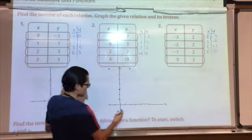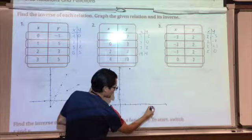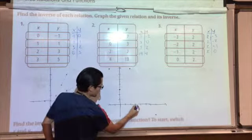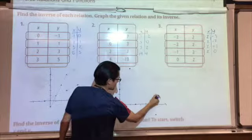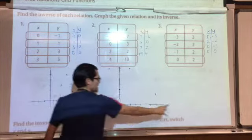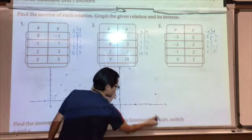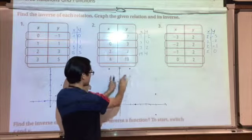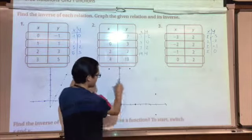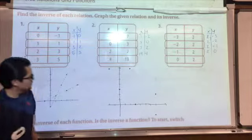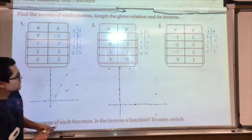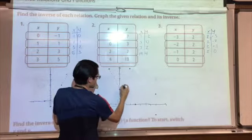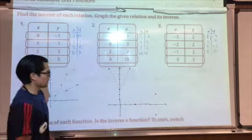My inverse will be: 7, negative 2 right here; 3, 0 right there; 7, 2; and 19, 4, which I'm not going to graph because it doesn't fit. But that's basically the idea. Notice that this could be an absolute value function — I don't know — but its inverse is right there. You could try to connect it with some dash lines, but you can't really connect these because you don't know if it's an actual function or not.